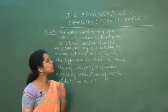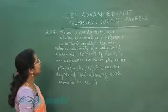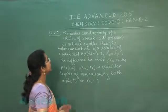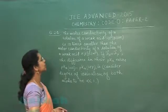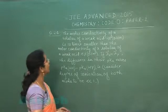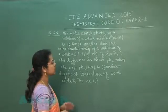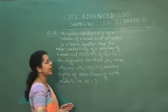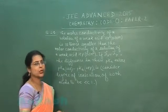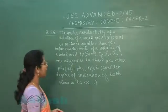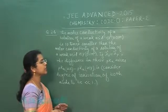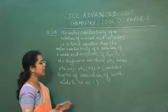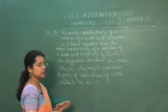Next question is question number 24. The molar conductivity of a solution of weak acid HX is 10 times smaller than the molar conductivity of a solution of weak acid HY. If molar conductivity of X⁻ is approximately equal to molar conductivity of Y⁻, the difference in their pKa values, pKa(HX) minus pKa(HY) is.